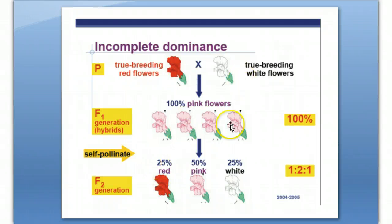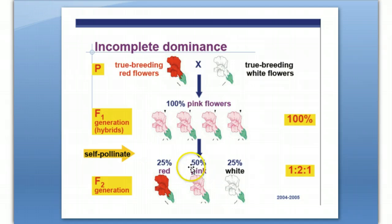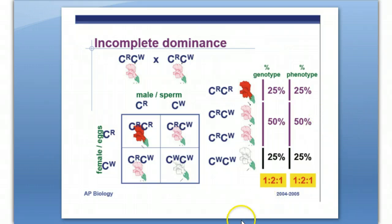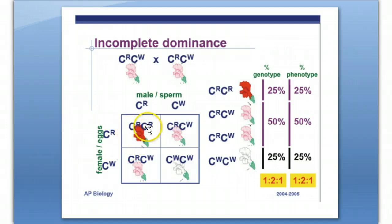Here we have our cross: red and white making pink. Remember that if red was dominant to white, they would all turn out red. The heterozygotes appear pink instead of red because the two traits are blended together — this is incomplete dominance. Using big R and big W as alleles for color, crossing the heterozygote R and W gives big R, big R for red; big W, big W for white; and the heterozygotes show blending of the traits, like mixing paint in a bucket.